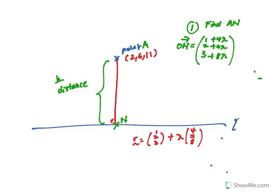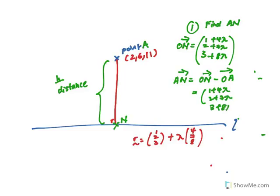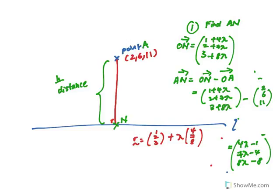I haven't started on the question yet — I'm just explaining concepts. AN is just ON minus OA. So ON minus OA gives us (1+4λ, 2+7λ, 3+8λ) minus (2,6,11), which gives AN = (4λ−1, 7λ−4, 8λ−8).